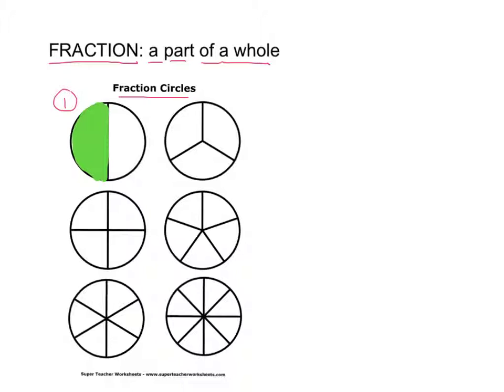So we would write this as a fraction. I'll show you how to write this. For number one, the fraction would be written as one — I colored in one section — out of how many sections were there? Two. So the fraction is one out of two.